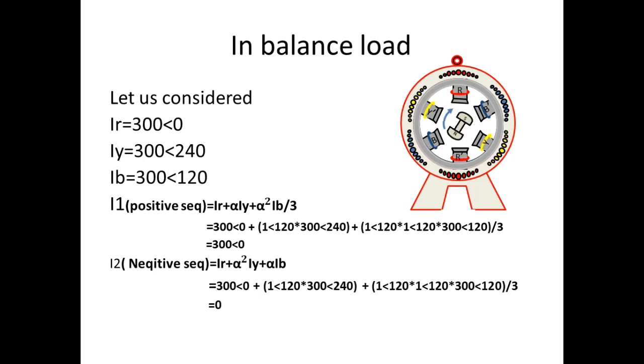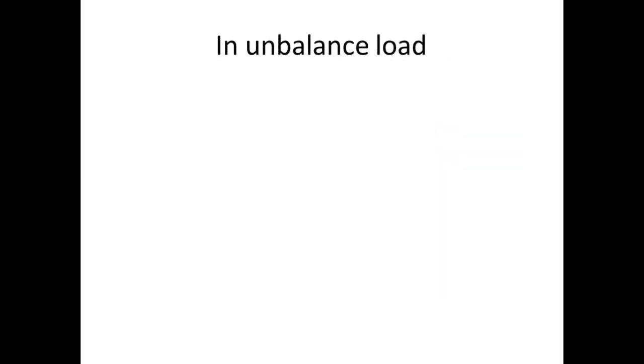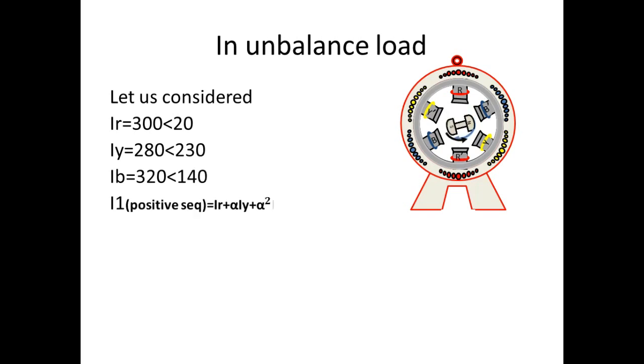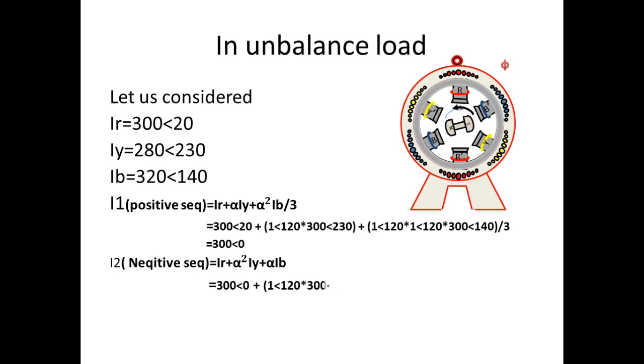Now if we go for unbalanced condition. Let us consider R phase has 300 amps with 20 degree and then Y phase having 280 amps with 230 degree and B phase has 320 amps with 140 degree. In this case the system will have both positive sequence and negative sequence. The magnetic field which is produced by positive negative sequence we can take it as theta dash.